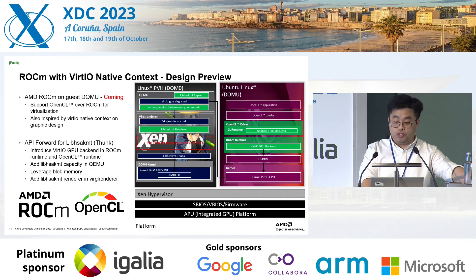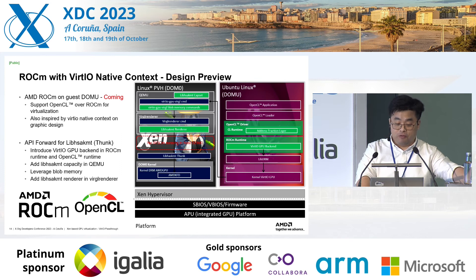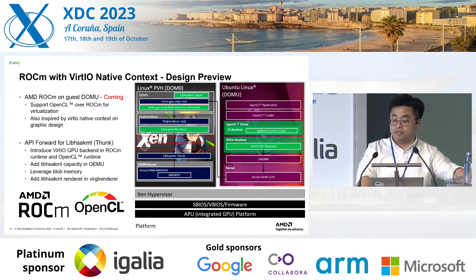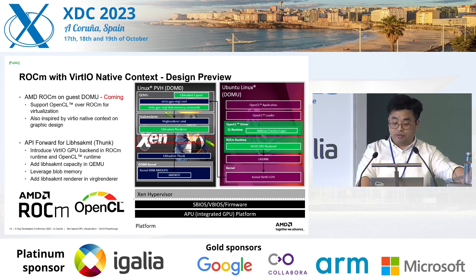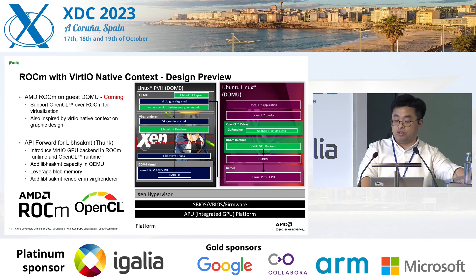GPU is not only used for graphics. The more important use scenario for GPU is compute support in AI and machine learning in the automotive market. So we designed an approach to enable AMD ROCm compute stack in the guest VM with VirtIO. We will have OpenCL support based on ROCm with the VirtIO native context solutions, forwarding HIP APIs with native context and forwarding through the VirtIO backend to the ROCm runtime to support OpenCL applications in the upper layer.